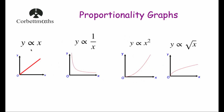Let's have a quick recap. Y is directly proportional to x: starts at the origin, goes up diagonally. Y is inversely proportional to x: as x gets bigger y gets smaller, and it has the shape of the reciprocal graph. Y is proportional to x squared: right-hand side of the parabola, starting at the origin curving upwards. Y is proportional to x cubed would be the same but steeper. And y is proportional to the square root of x starts at the origin with the square root graph shape.